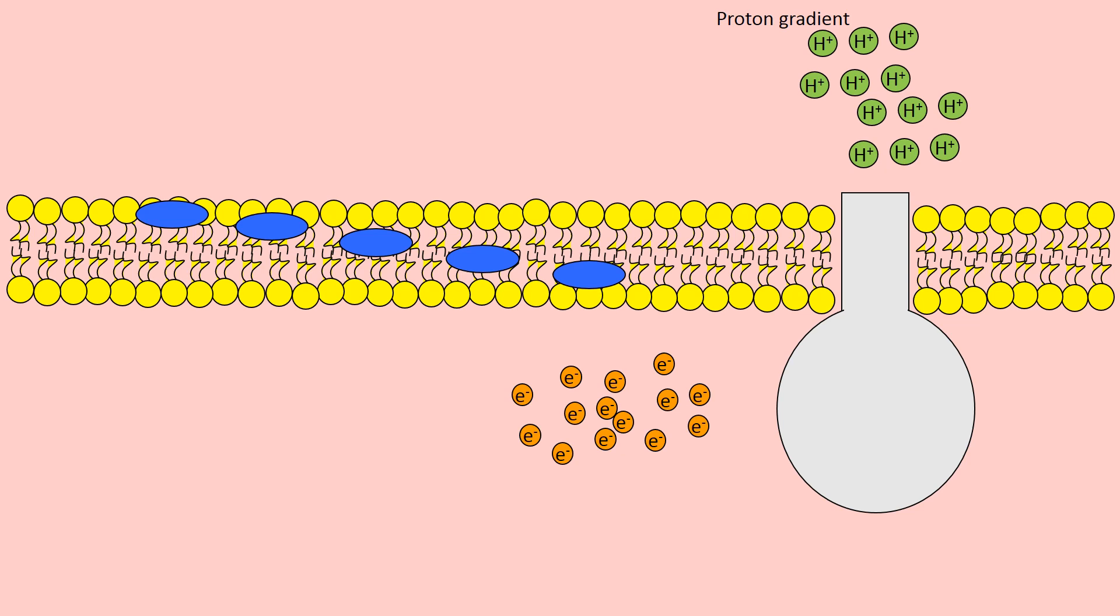Now we've got these proton gradients and they're stuck in the inter membrane space and they cannot go across the inner membrane, but they can flow down the ATP synthase enzyme. This is chemiosmosis.